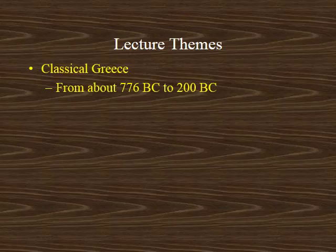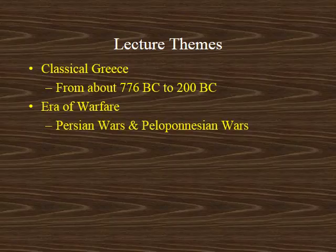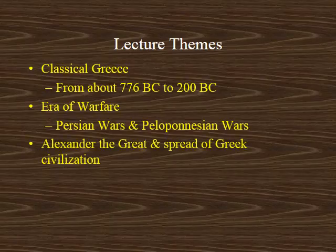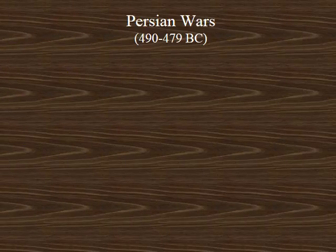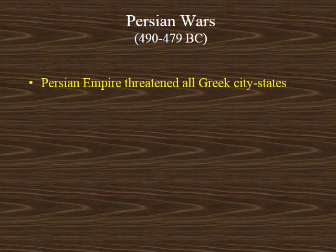This era is characterized by a tremendous amount of warfare — the Persian Wars and Peloponnesian Wars. We'll see the rise of Alexander the Great and the spread of Greek civilization throughout the entire Mediterranean and even into the Far East. We will begin the study of the era of warfare with the Persian Wars and the response by the different Greek city-states with the creation of the Greek League. The era of the Persian Wars began in 490 BC as the Persian Empire began to expand westward and pose a threat to all the Greek city-states.